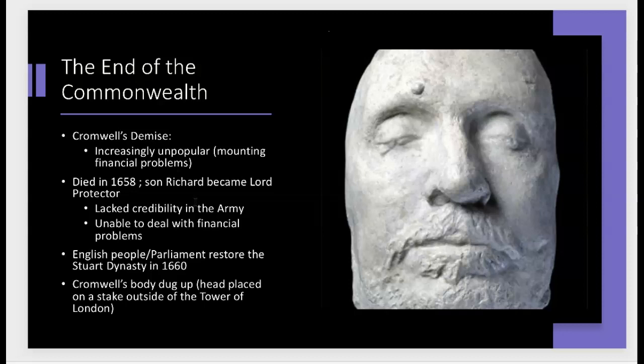Richard Cromwell proved to be an ineffective leader. He didn't have the respect or credibility with the army and was unable to deal with financial problems — he simply couldn't maintain the same control over the people that his father did. The growing dissent of the English people and Richard's inability to maintain control ultimately led to the Commonwealth collapsing in 1660, when Parliament asked Charles II, who had gone into hiding in France, to return to England and restore the monarchy under the stipulation that it would be a limited or constitutional monarchy.